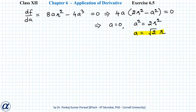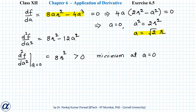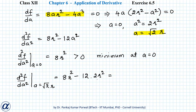To check whether we have a maximum or minimum, I will do the second derivative test. The second derivative d²F/dA² equals 8R squared minus 12A squared. At A equals 0, d²F/dA² equals 8R squared, which is positive, so we have a minimum at A equals 0 — this is not the case we are interested in. At A equals root 2R, d²F/dA² equals 8R squared minus 12 times 2R squared, which equals 8R squared minus 24R squared, that is negative, so we have a maximum at A equals root 2R.